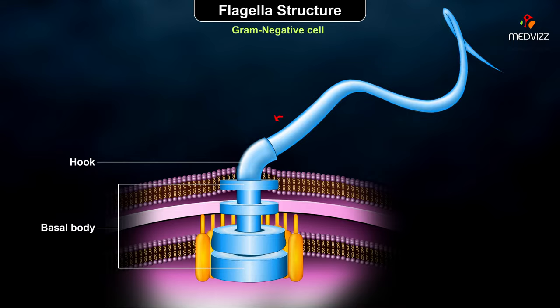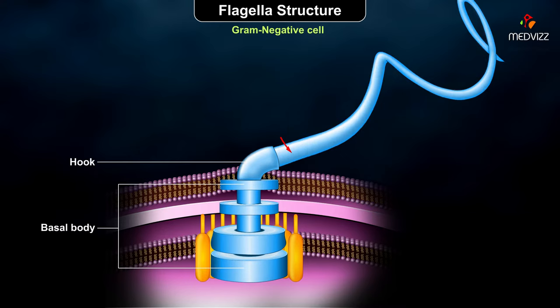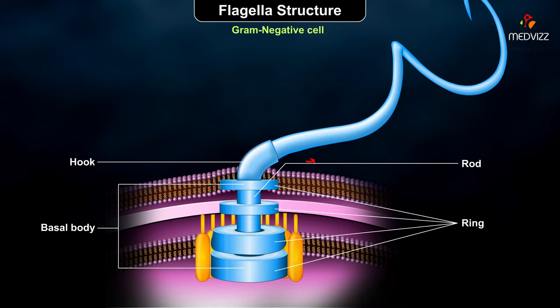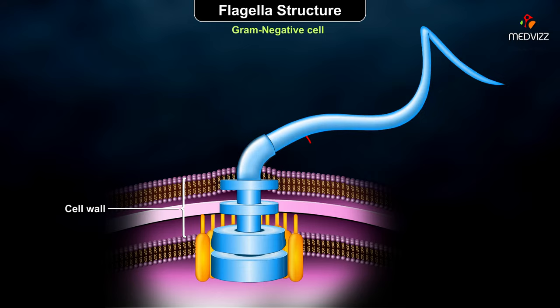The basal body is composed of different proteins than the filament and hook. It consists of a rod and a series of either two or four rings, which anchor the flagellum to the cell wall and allow the flagellum to rotate 360 degrees.